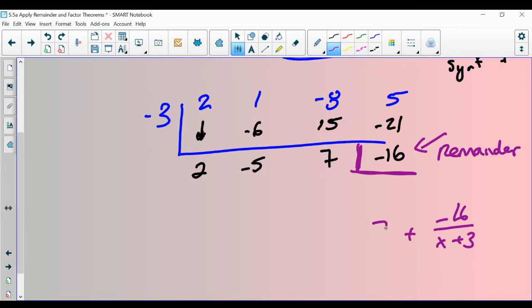Then work backwards. Seven is going to be the term that has no x. Negative five is going to have one x. And the x squared here is going to be with the two. And that's your final answer.